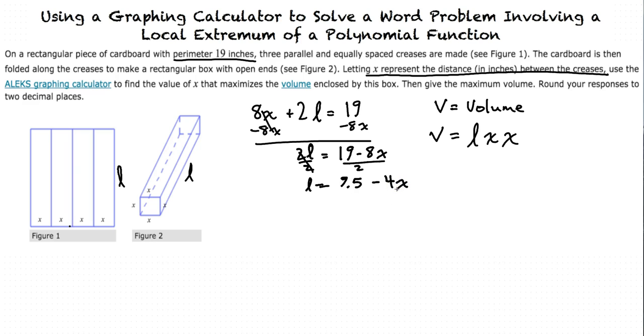We can now plug in this solution for l into the volume equation to get v equals l becomes 9.5 minus 4x times x times x. Or, we'll write it as v equals x squared times 9.5 minus 4x.